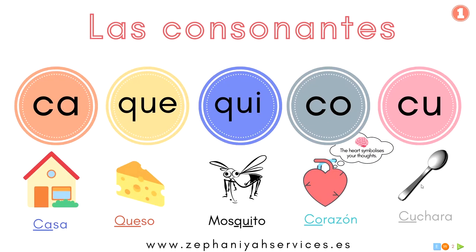Now let's see this. Ka — casa. Ka — casa. Que — queso. Mmm, me gusta mucho el queso. Que — queso.